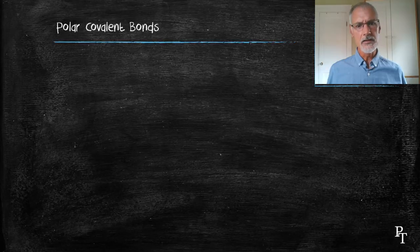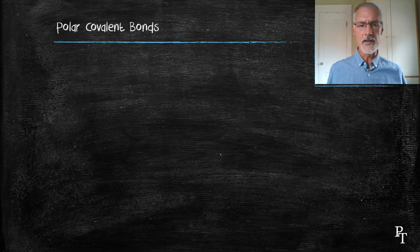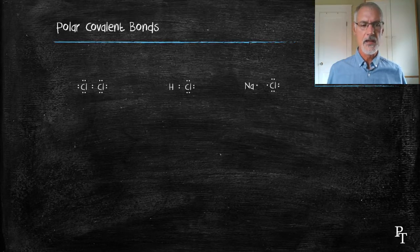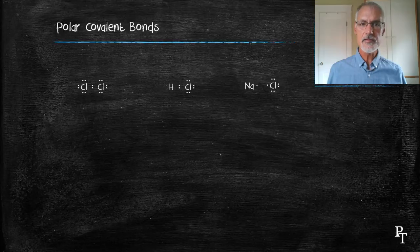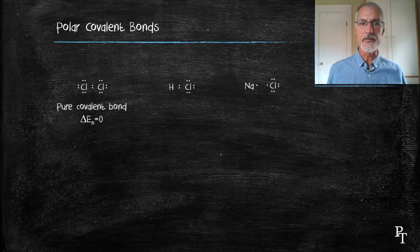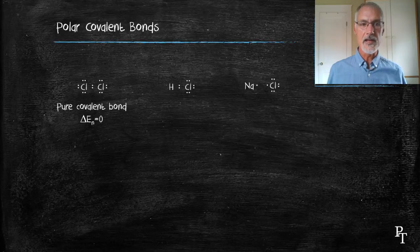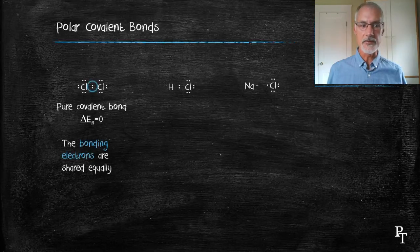I would like to look now at a little comparison between ionic and covalent bonds by looking at three compounds. Let's first begin with chlorine bonded to chlorine, Cl2. The difference in electronegativity of these two elements is zero, and it forms what we call a pure covalent bond. In that case, we have equal sharing of those electrons.